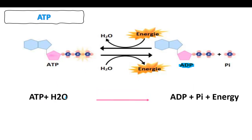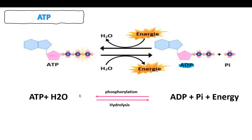So ATP plus water turns into ADP plus a phosphate plus the release of energy. This reaction is called hydrolysis — 'hydro' from water, 'lysis' meaning breaking down. The reverse reaction occurs when this phosphate is added back onto the ADP using energy to get ATP, releasing water. We call the reverse reaction phosphorylation — in this case we store energy.